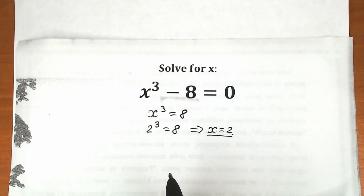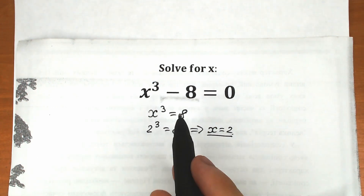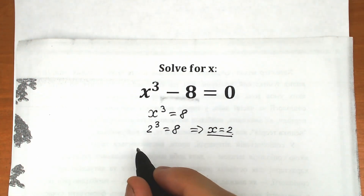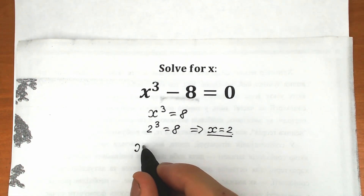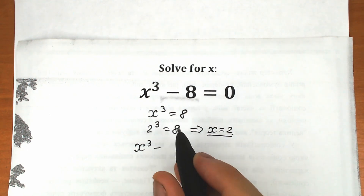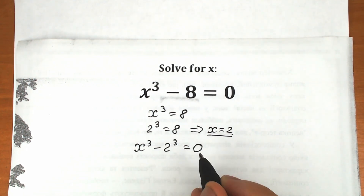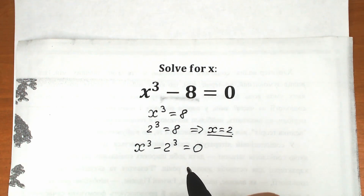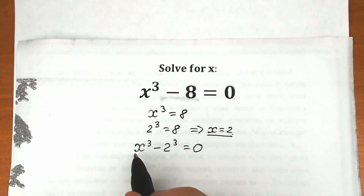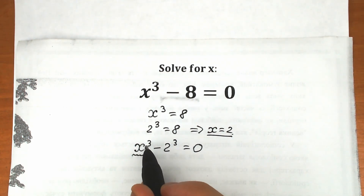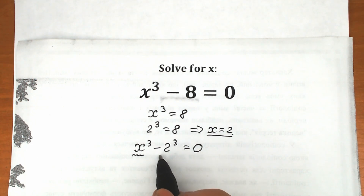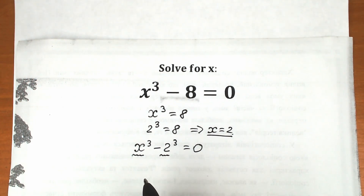How can we do this? First, let's write this 8 as 2 cube. So we have x cube minus 2 cube equal to 0. Right here we have a difference of two cubes — x is the first value cubed, and 2 is the second value also written as a cube.